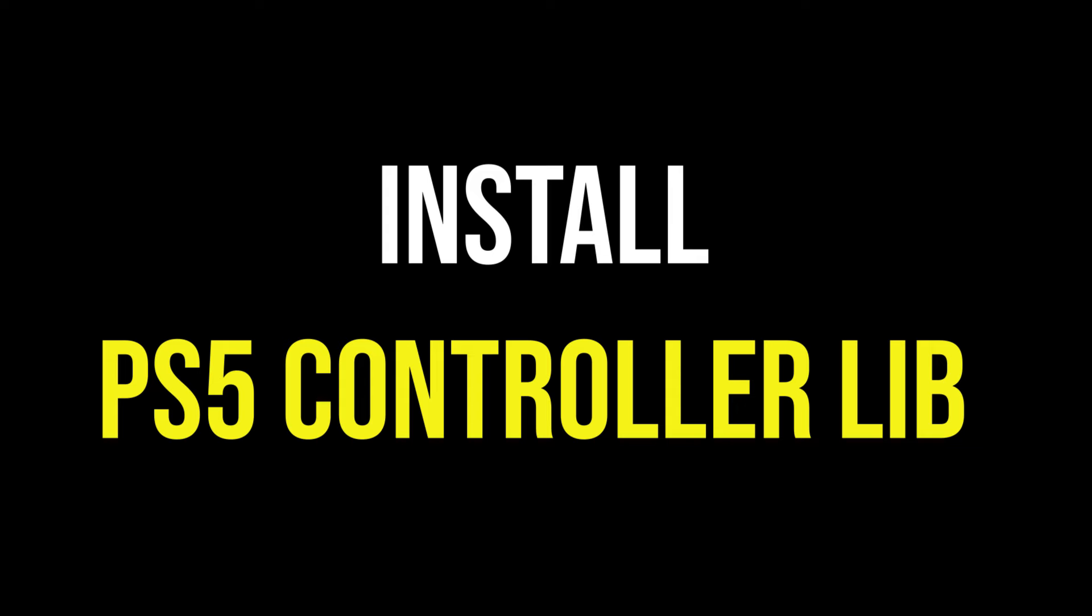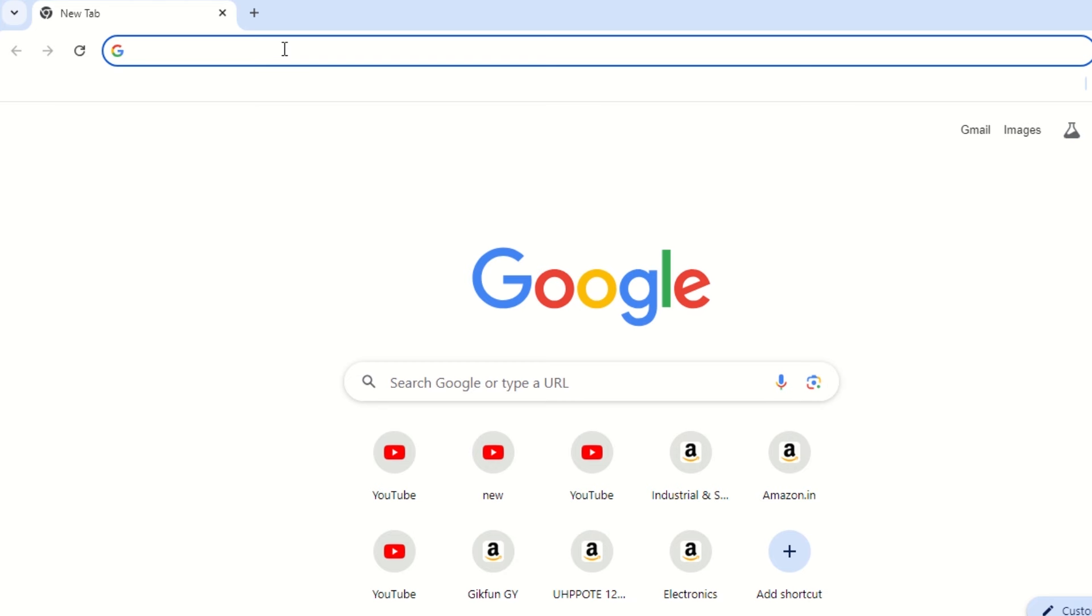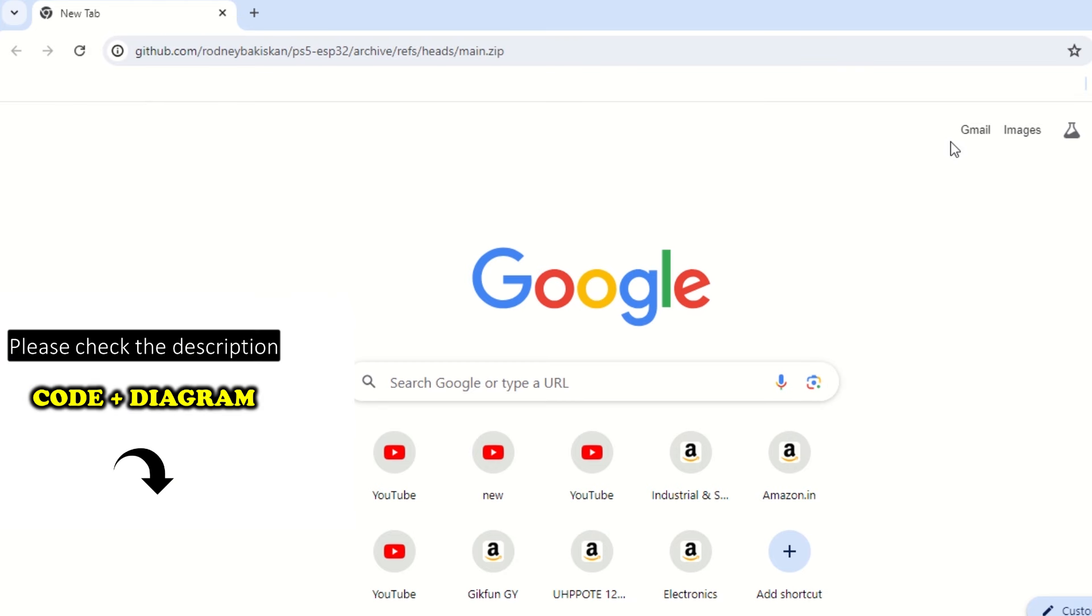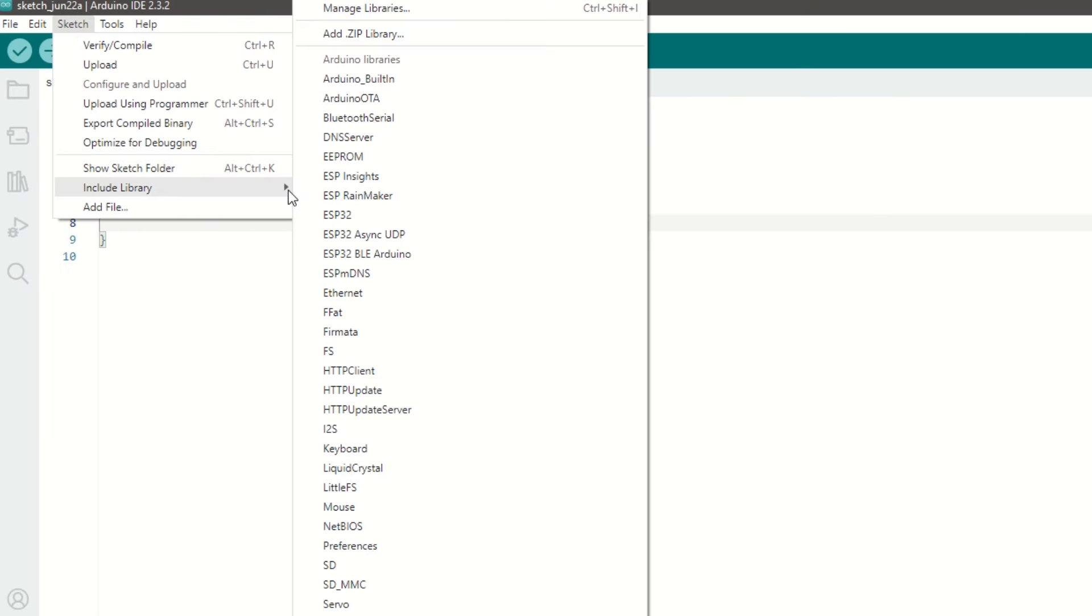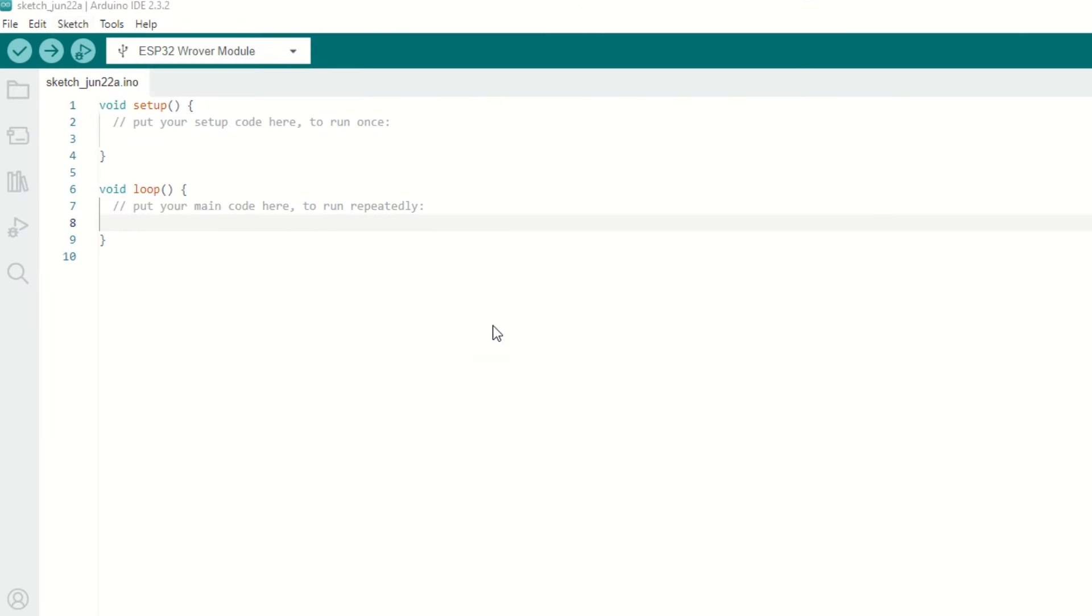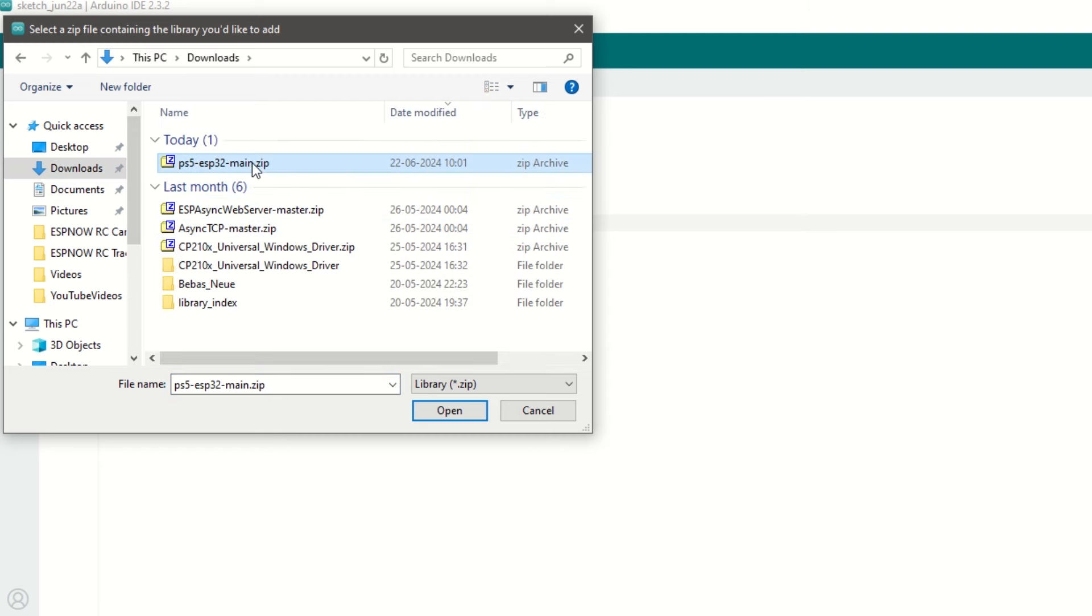After that we need to install PS5 controller library as well. Download this library from the link provided in the description below. Once downloaded, go to Sketch, Include Library and then click on Add Zip File. Select the downloaded zip library file and click Add.